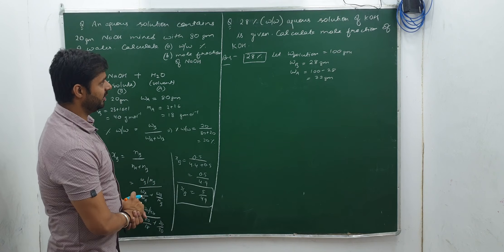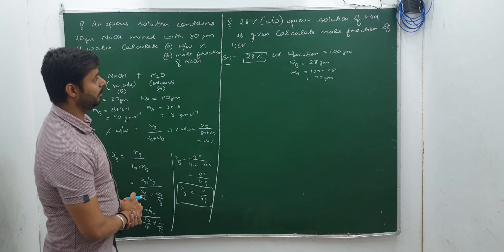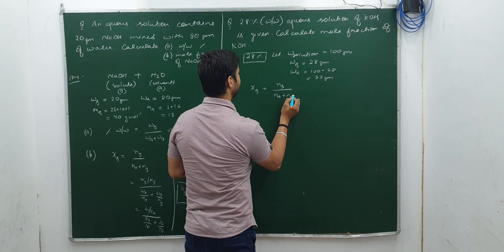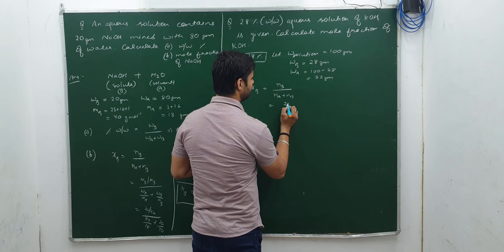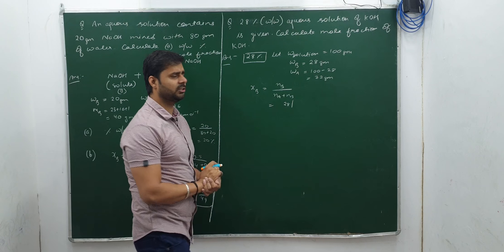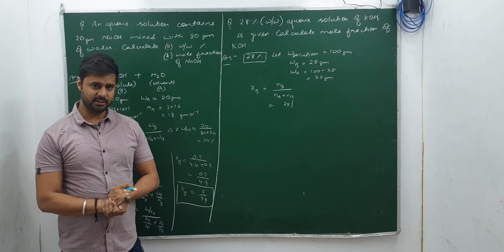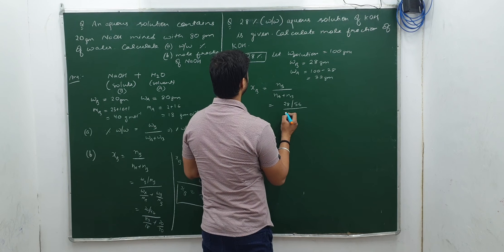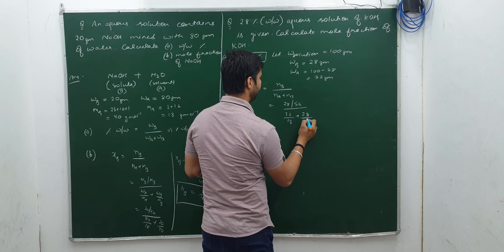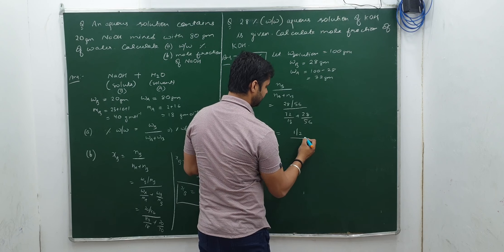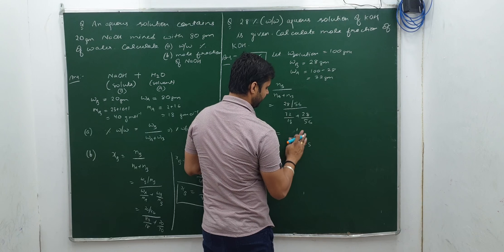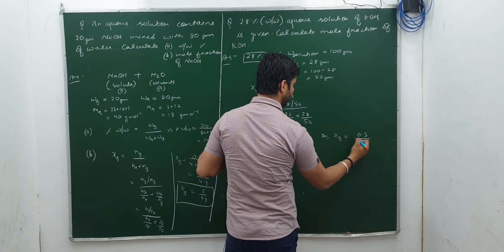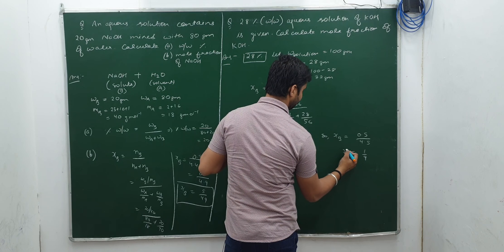Now we have W_B and W_A. Mole fraction of KOH: ξ_B = N_B / (N_A + N_B). N_B = 28 / molar mass of KOH. Molar mass of KOH: K = 39, O = 16, H = 1, total = 56. N_A = 72/18. So ξ_B = (28/56) / (72/18 + 28/56) = 0.5 / (4 + 0.5) = 0.5 / 4.5 = 1/9.